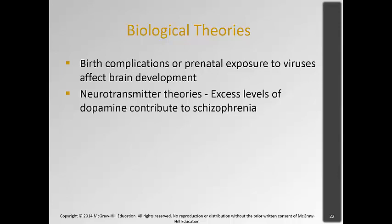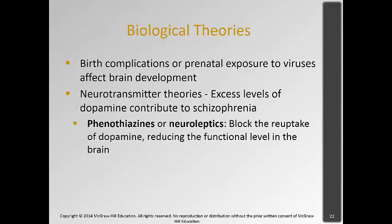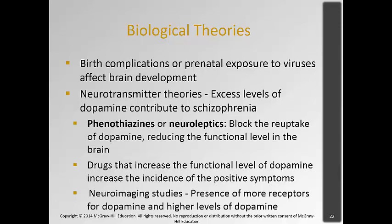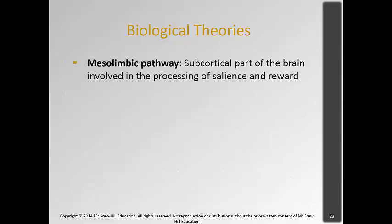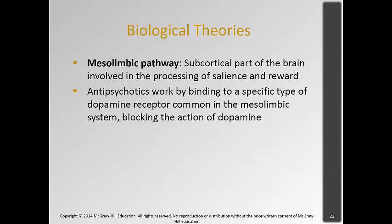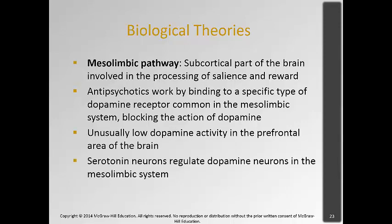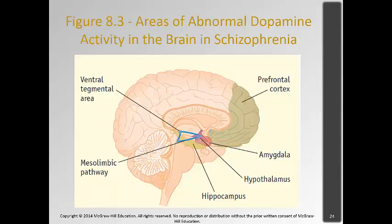There are neurotransmitter theories involving excessive levels of dopamine — similar to what we see in substance abuse, people with too much dopamine start hallucinating. Neuroleptics, which block the reuptake of dopamine, decrease symptoms, while drugs that increase dopamine levels produce positive symptoms. Neuroimaging studies show more dopamine receptors and higher levels of dopamine in individuals with schizophrenia. There is also evidence involving the mesolimbic pathway, where the subcortical part of the brain processes salience and reward. Antipsychotics work by binding to dopamine receptors in the mesolimbic system and blocking dopamine. Low dopamine activity is also found in the prefrontal cortex, and serotonin neurons regulate dopamine neurons in the mesolimbic system — these serotonin-dopamine interactions are not functioning properly in those with schizophrenia.